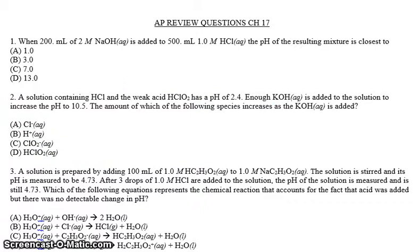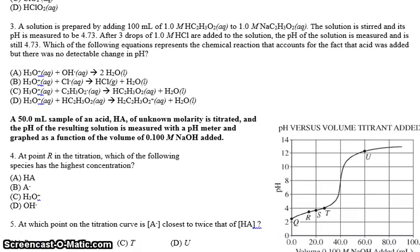A solution is prepared by adding 100 mL of 1 M acetic acid, so this is a weak acid, HC2H3O2, to 1 M sodium acetate. Now what we see here is we see a weak acid and its conjugate base. So what we're thinking of is a buffer. The solution is stirred, and its pH is measured to be 4.73. After three drops of 1 M HCl are added to the solution, the pH of the solution is measured and is still 4.73. Which of the following equations represents the chemical reaction that accounts for the fact that the acid is being added, but there's no detectable change in pH?